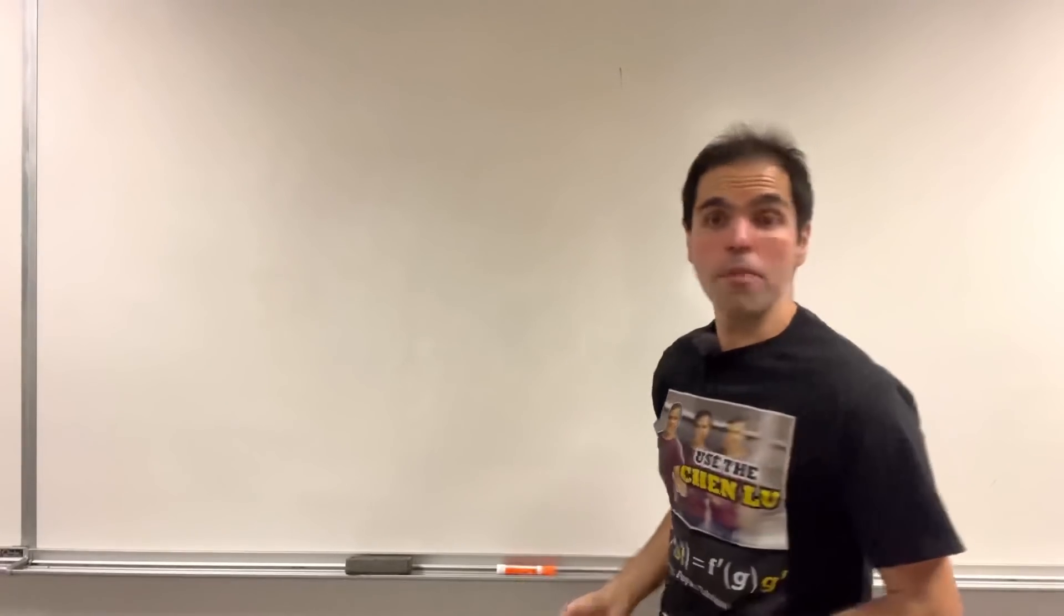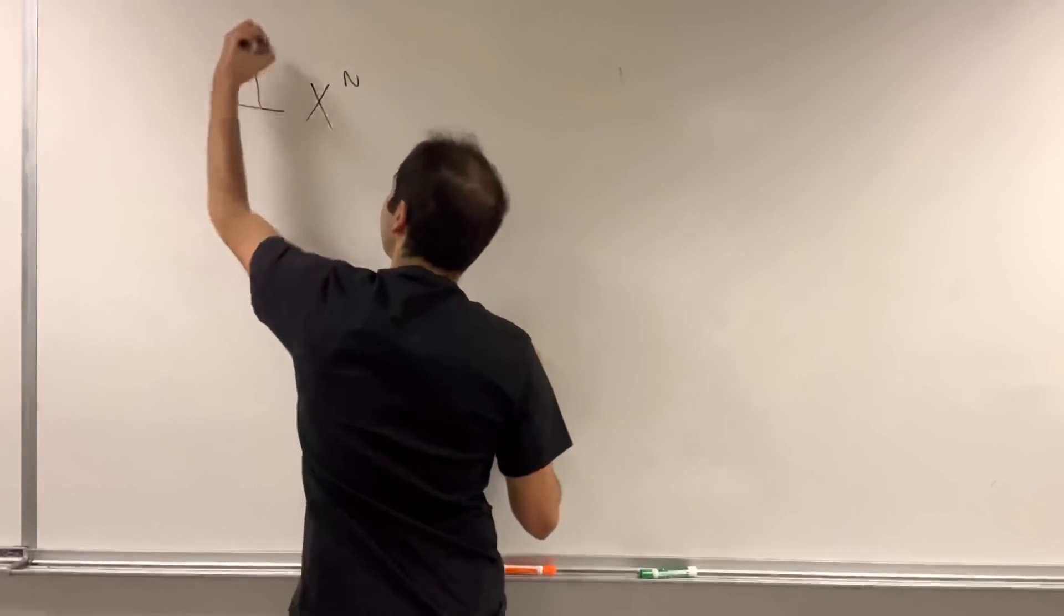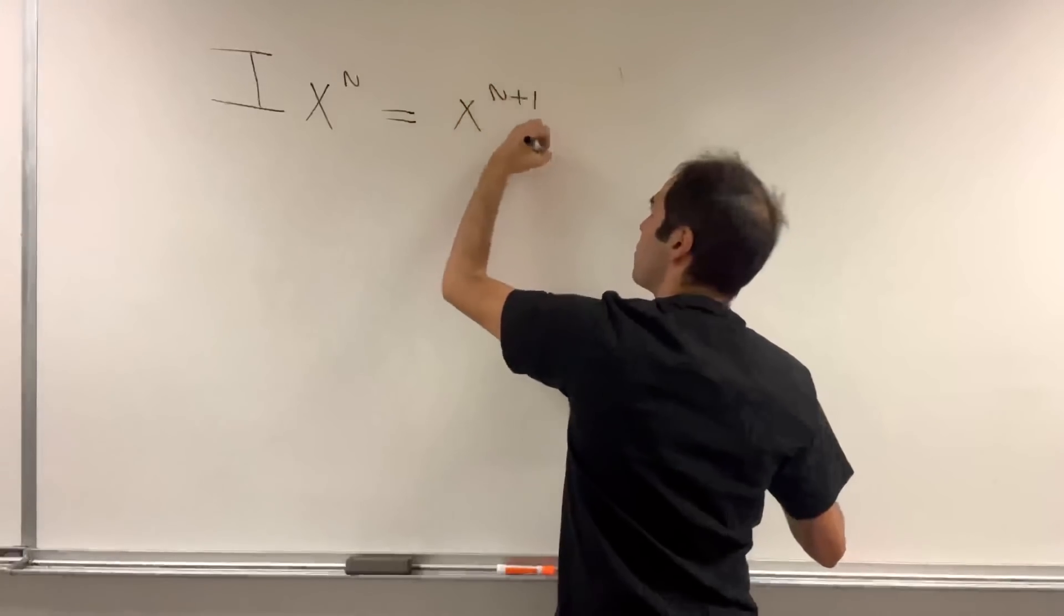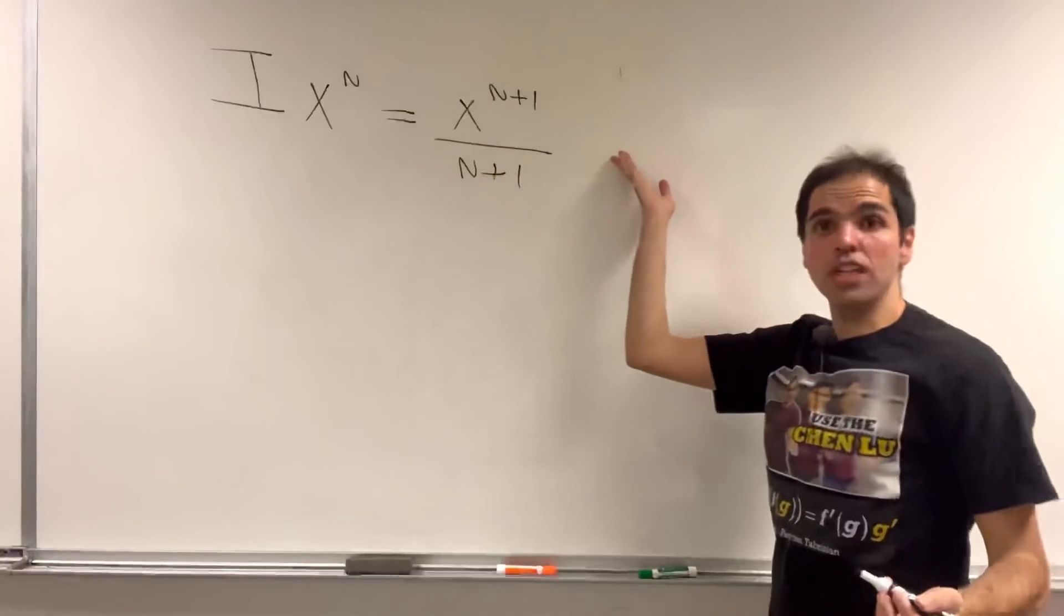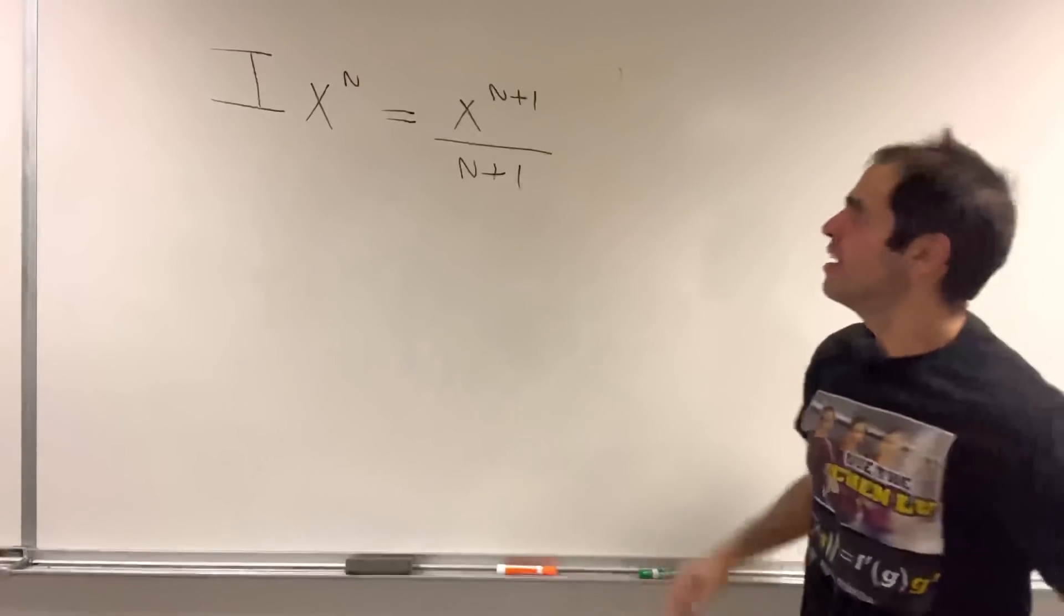Well, if you take a power function x to the n, if you integrate it, then what happens is one power comes up, x to the n plus 1, and you divide by that power, usually plus some constant, but here, let's ignore the constant.